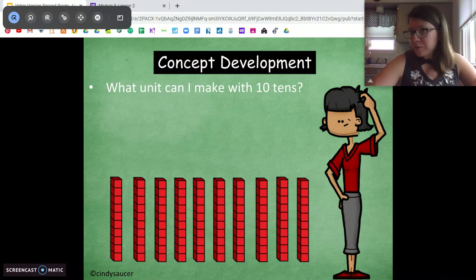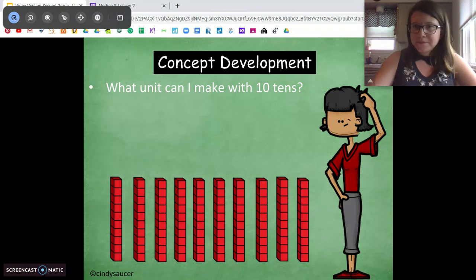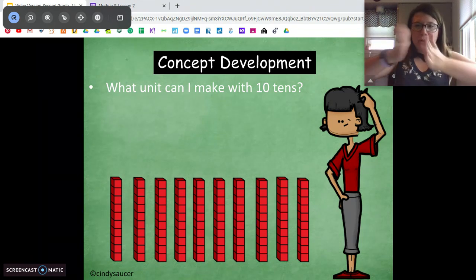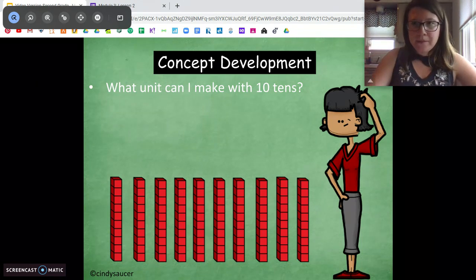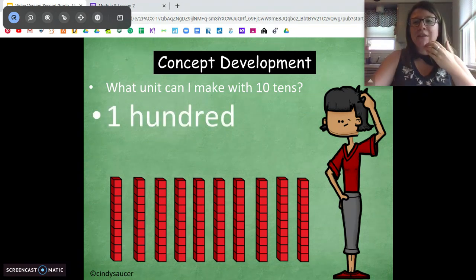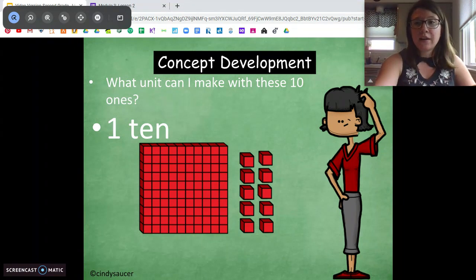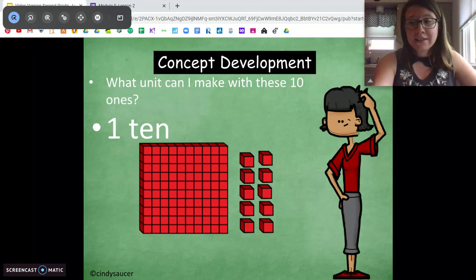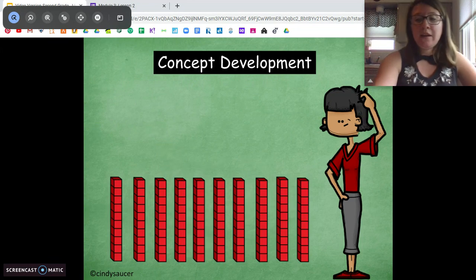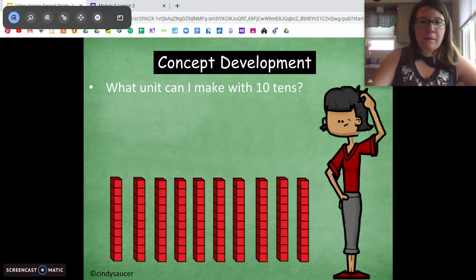Okay. What can we make with these 10 tens? Are we just going to leave them like 10 tens? We're going to push them together, and what are we going to make? 100. Good. We're going to push the 10 tens together to make 100. Just like we put the 10 ones together to make 110, we're going to put the 10 tens together to make 100. Awesome.